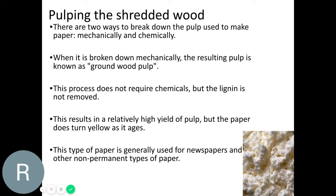After the wood is shredded in timber plants, there are two ways of breaking down the wood to make paper: mechanically and chemically. When we break the timber down mechanically, the resulting pulp is known as ground wood pulp. Breaking it down mechanically means machinery hammering the timber chippings with water and mixing them together until it creates this porridge-like material. The process doesn't require chemicals, but because chemicals aren't used, the lignin — the element of timber that yellows paper — is not removed. Mechanical pulping results in a relatively high yield of pulp, but the paper turns yellow.